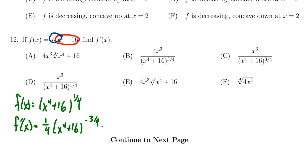Then we multiply by the inner derivative, the derivative of x^4 + 16, which equals 4x^3. We see that these fours cancel out and our derivative is going to look like x^3 over (x^4 + 16) raised to the 3/4 power.